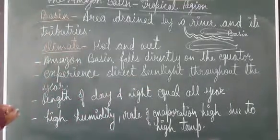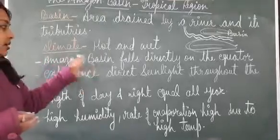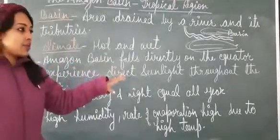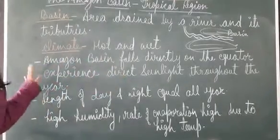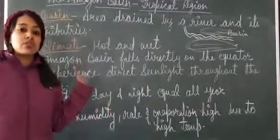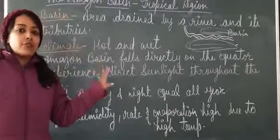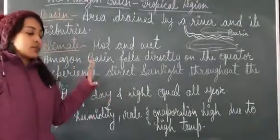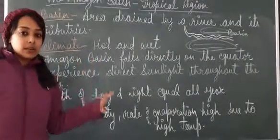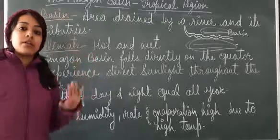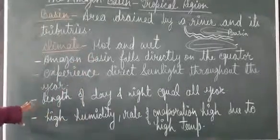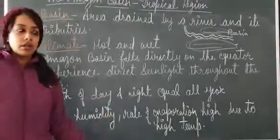Amazon Basin falls directly on the equator and experiences direct sunlight throughout the year. The temperature is very high year-round because sun rays directly fall on the equator. The day and night are equal all year.